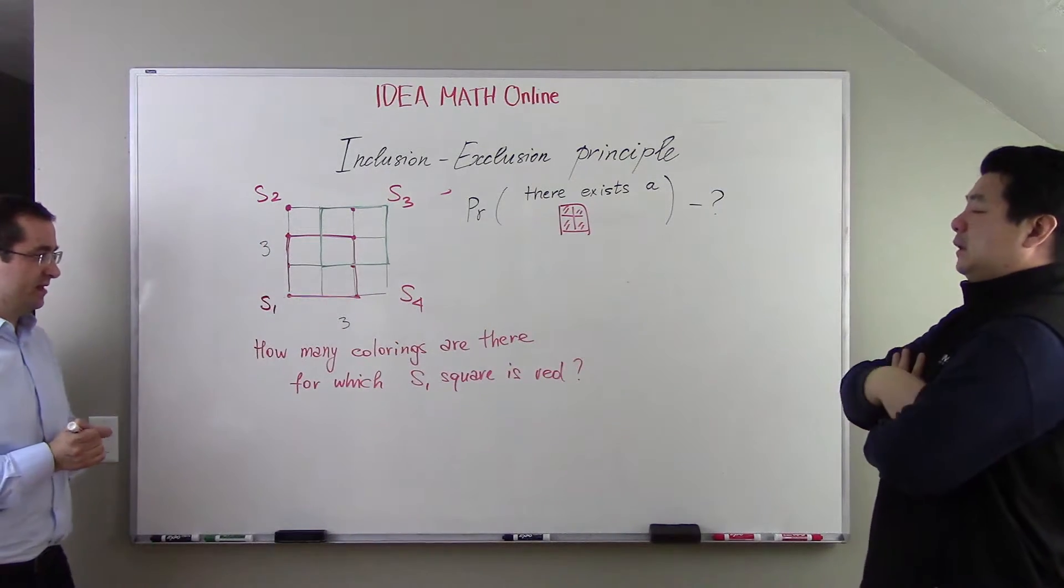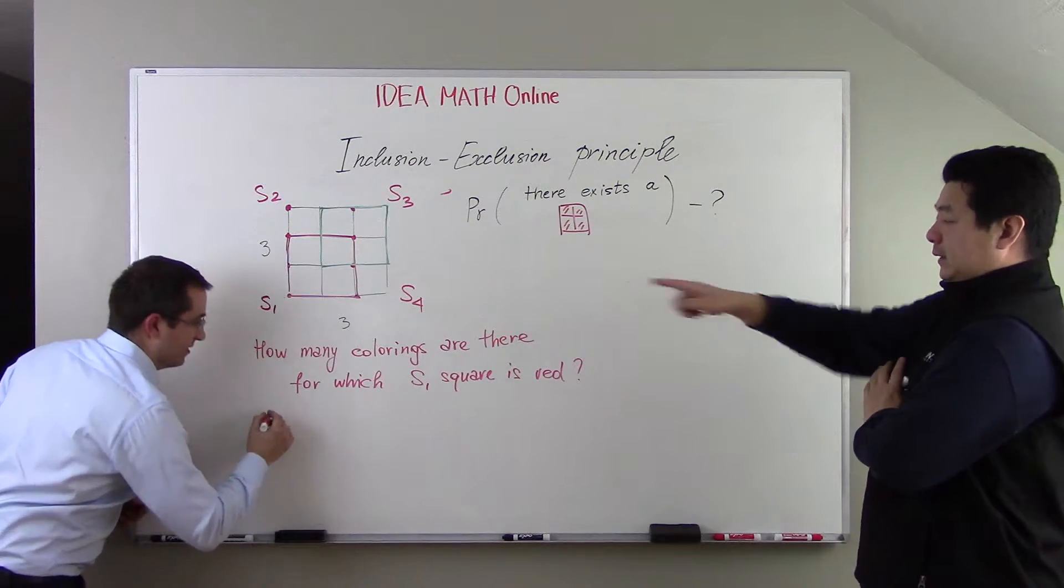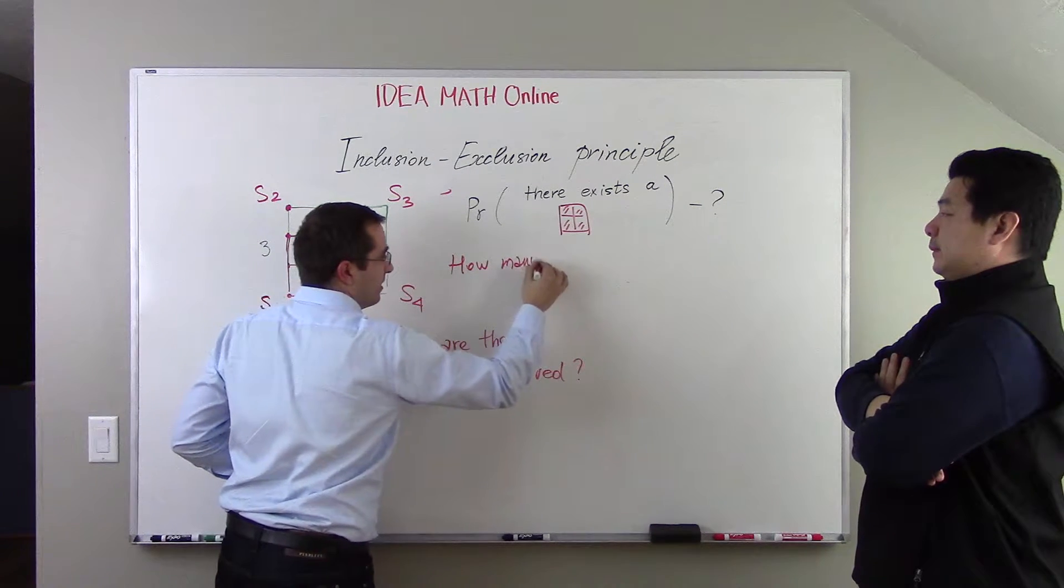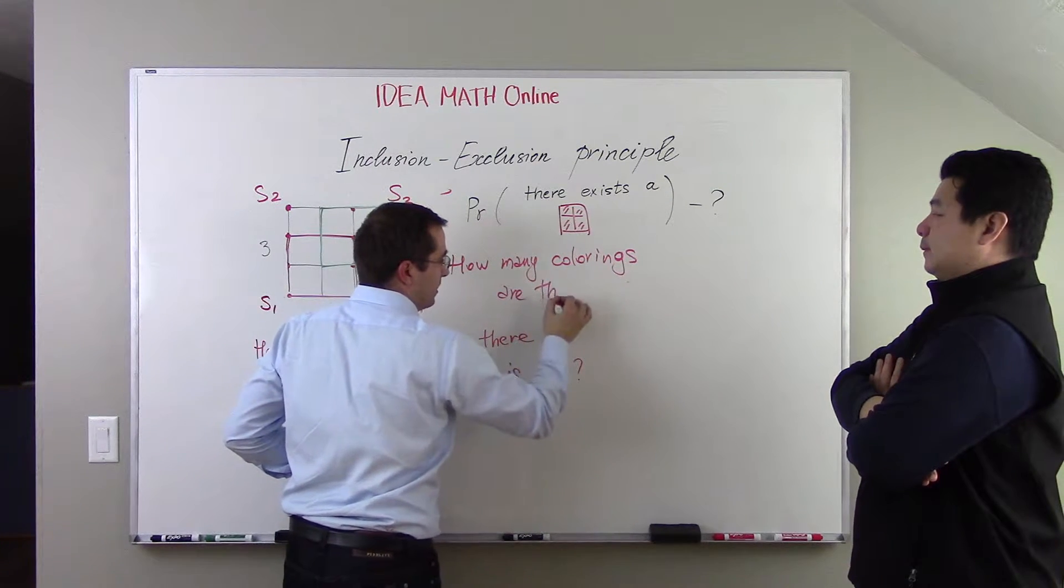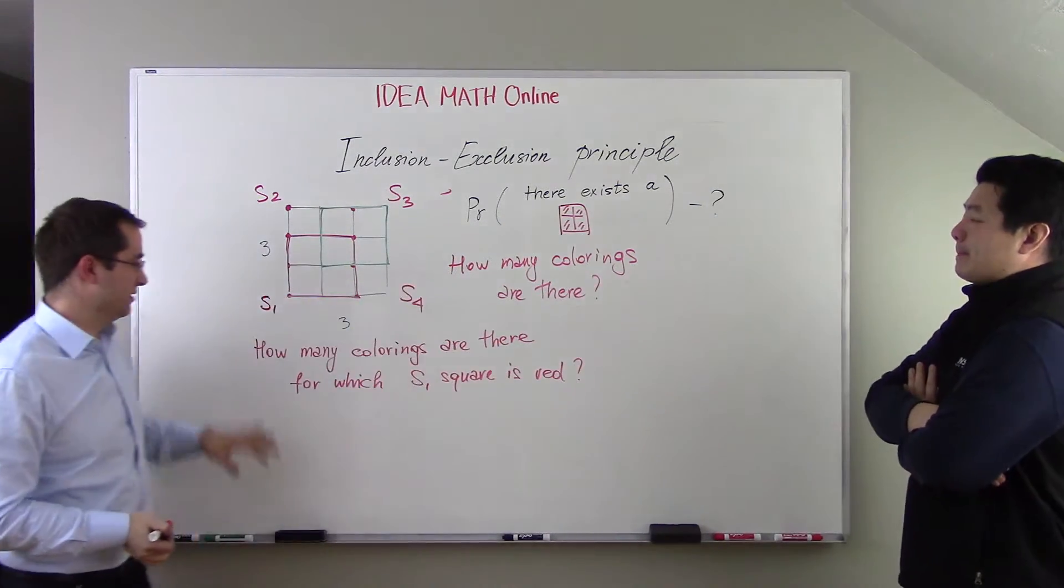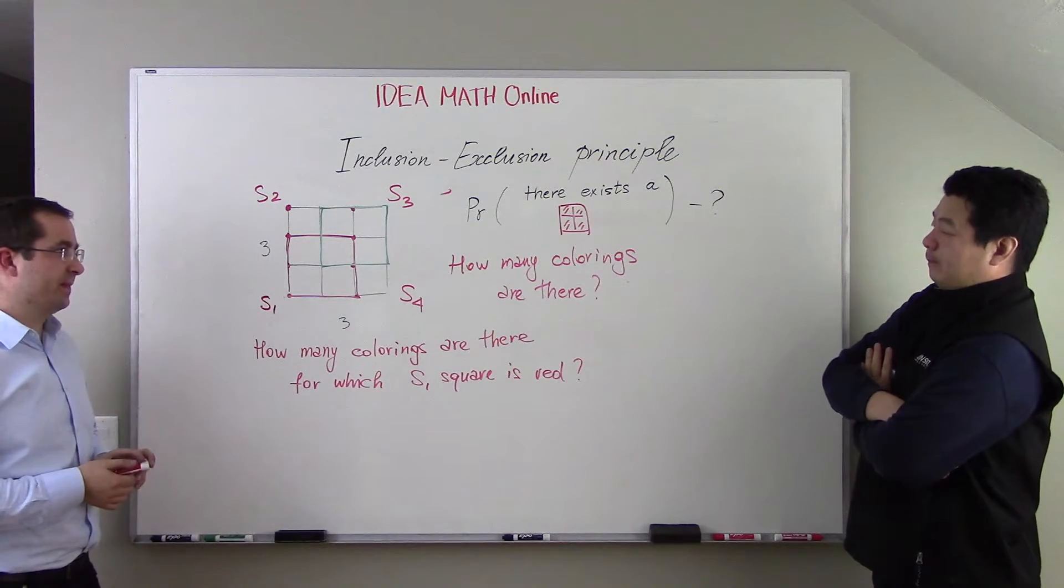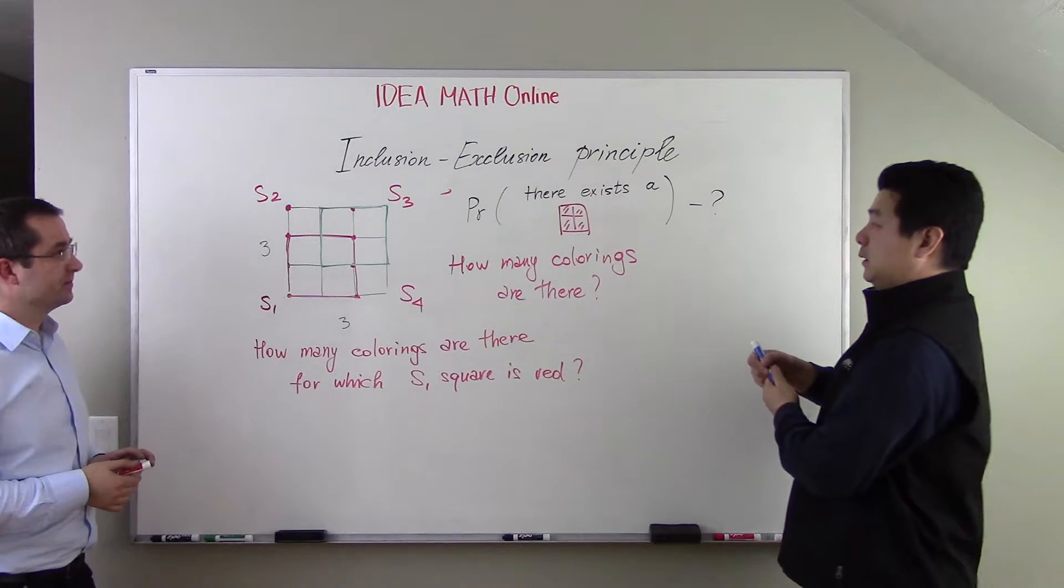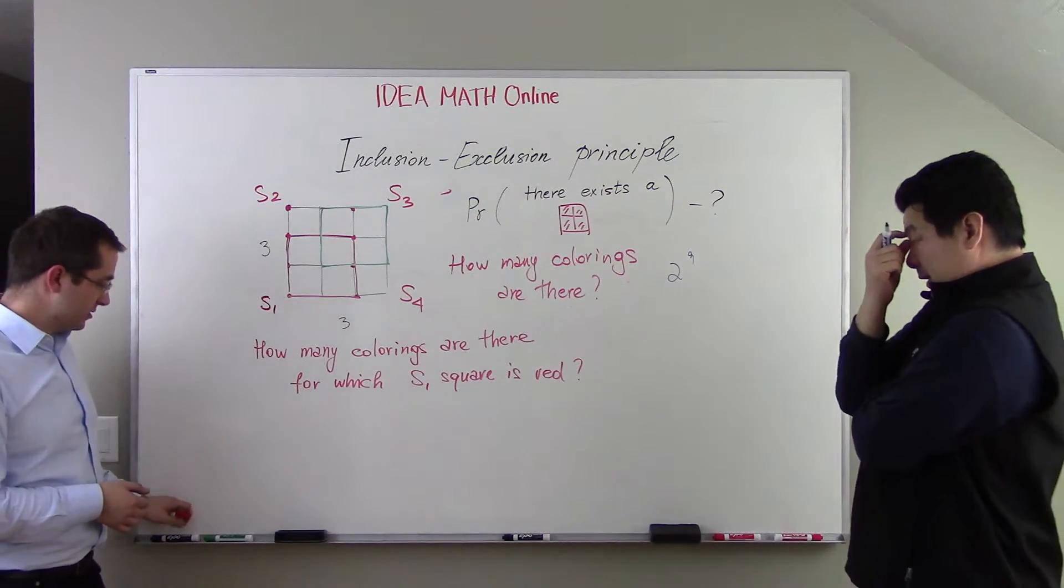Yes. And S2, this is S3 which is in green, and S4. So I'm looking for a probability that the red square exists. So the first question for you guys, how many colorings are there? You can ask an even easier question: how many colorings are there? Because that's your sample space.